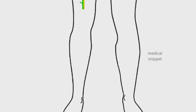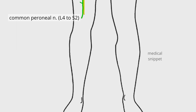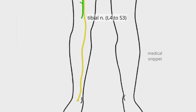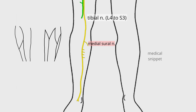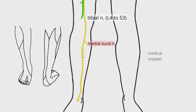Near the popliteal fossa, the sciatic nerve divides into common peroneal and tibial nerves. The tibial nerve travels down the posterior compartment of the leg into the sole of the foot. It supplies the muscles of the posterior compartment of the leg, like gastrocnemius, soleus, plantaris, and popliteus muscles. The tibial nerve gives off a cutaneous branch called the medial sural nerve at the popliteal fossa, which supplies the skin of the lower half of the back of the leg and lateral border of the foot until the tip of the little toe.